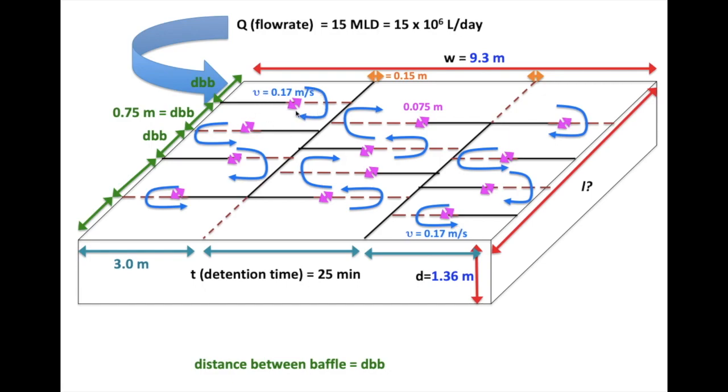We have already calculated the total distance traveled by water in the flocculation tank, which is 255 meters.